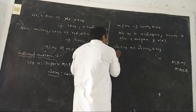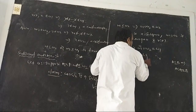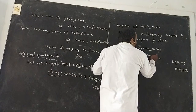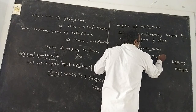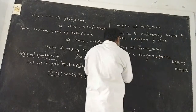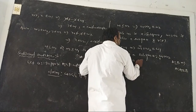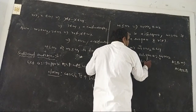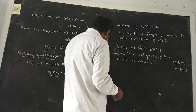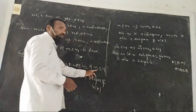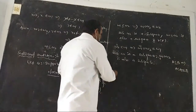Similarly, if W2 is a subset of W1, then W1 union W2 equals W1. Since W1 is a subspace, W1 union W2 is a subspace. This completes the proof.